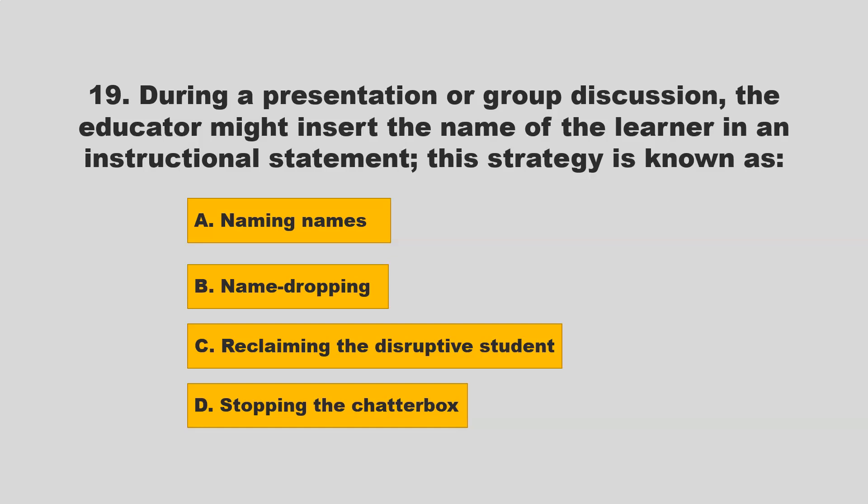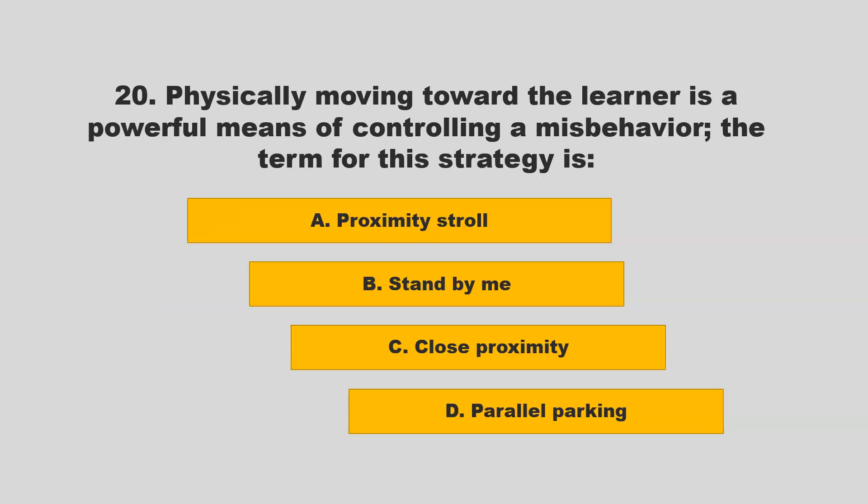During a presentation or group discussion, the educator might insert the name of the learner in an instructional statement. This strategy is known as name dropping. Other options included naming names, reclaiming the disruptive student, and stopping the chatterbox. If you chose B, name dropping, you are correct.